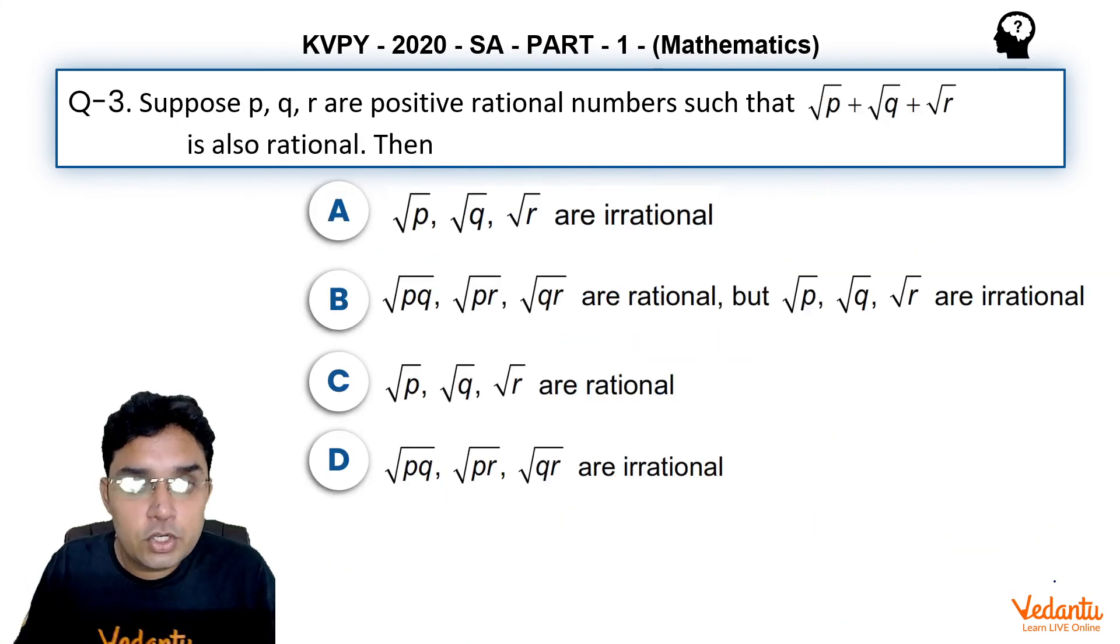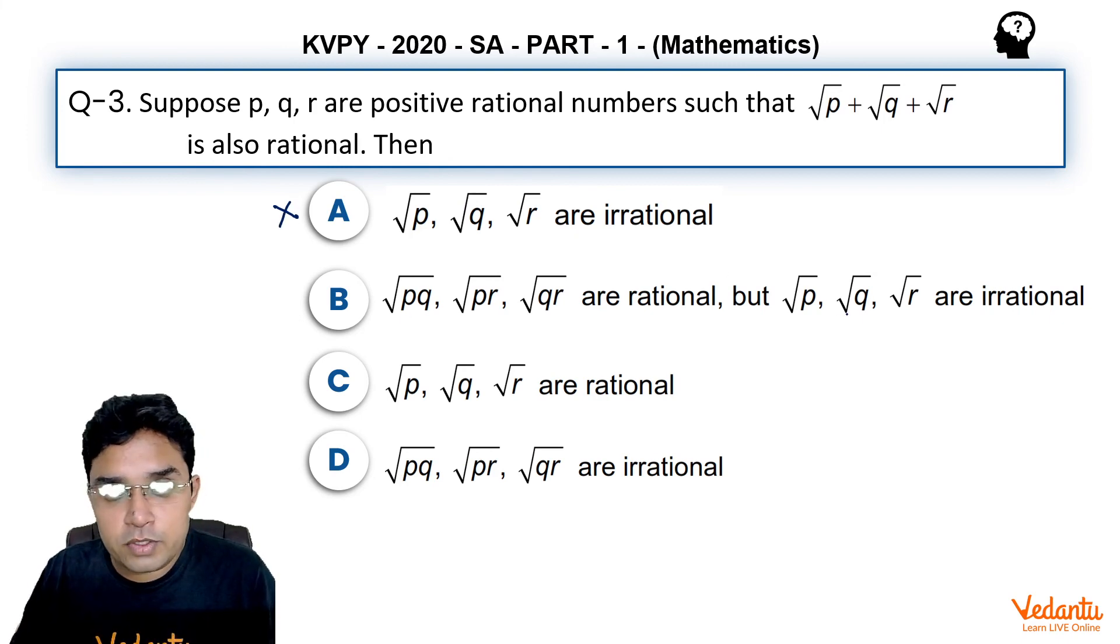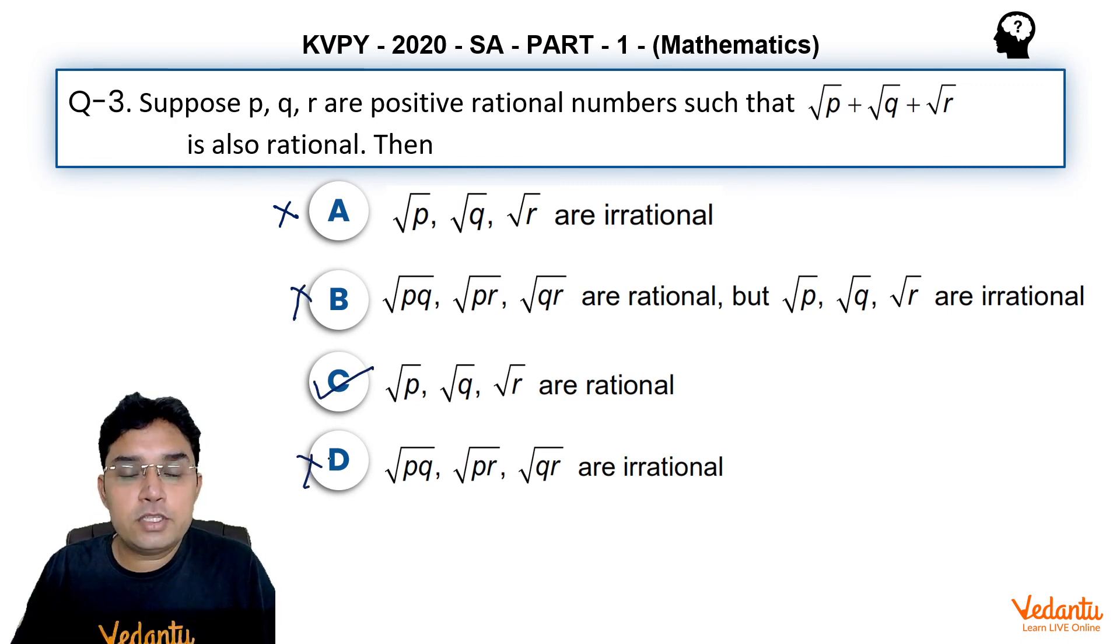So option A should be wrong because it says they are irrational. B is also wrong because it is again saying they are irrational. C seems to be correct. D is again wrong. So the answer for this question should be C.